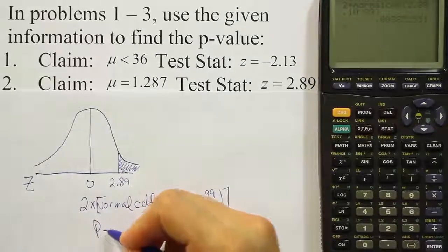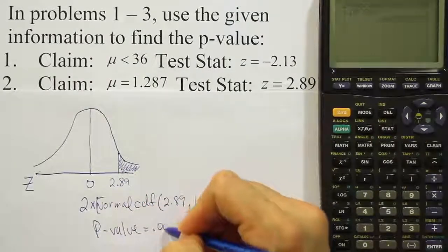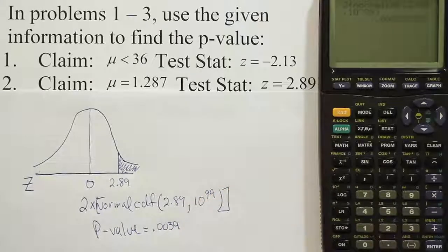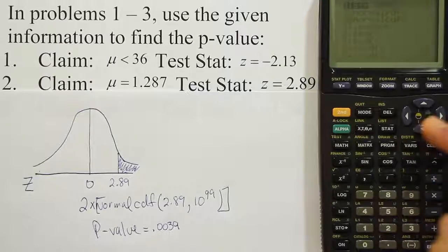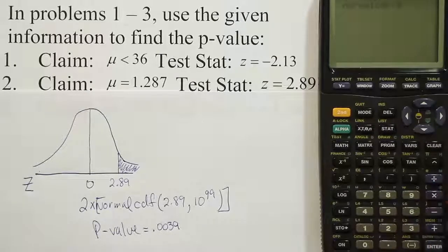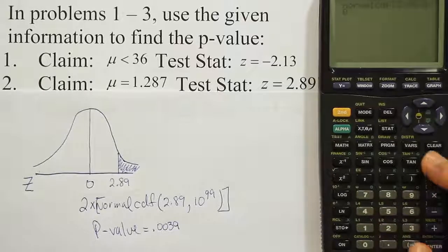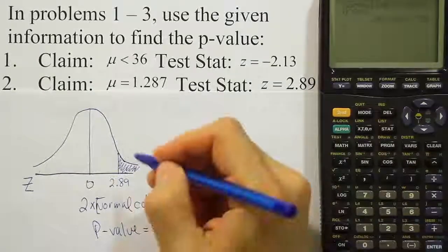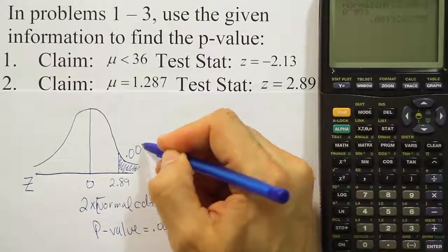So we're going to say the p-value is .0039. If you had done it in a separate step, you would have had second vars option 2. And you would have said 2.89, 10 to the 99th power. Close that up. Hit enter.